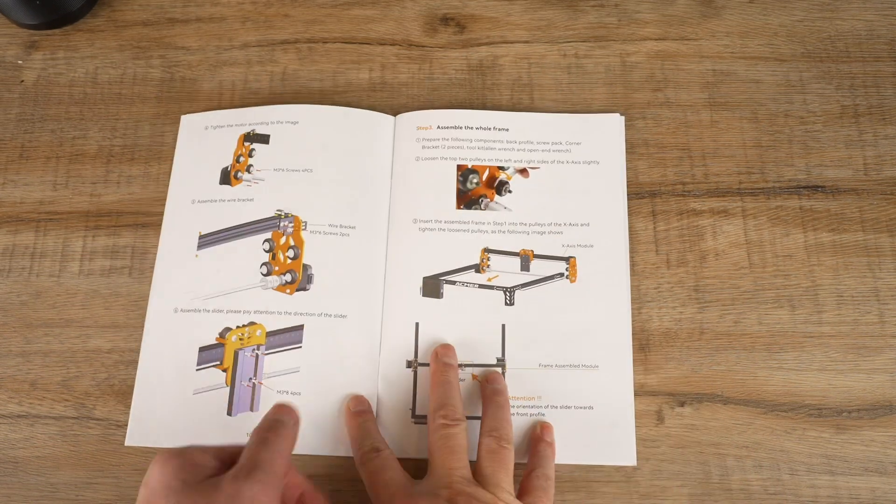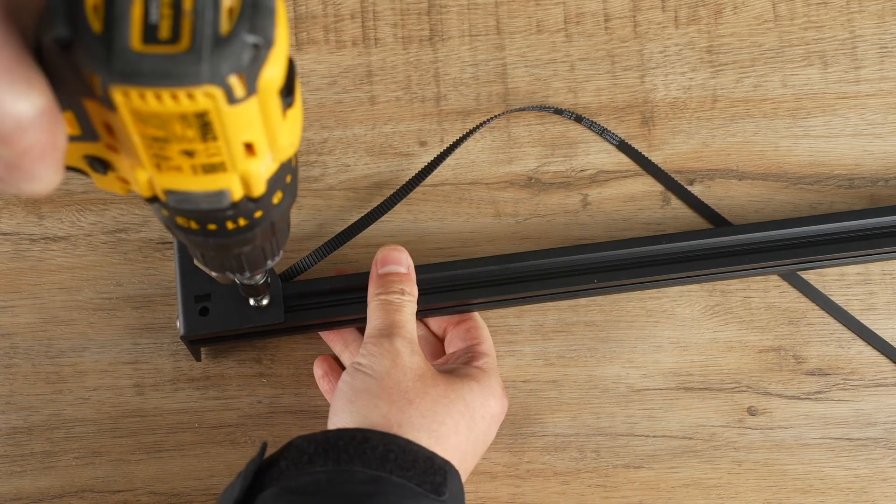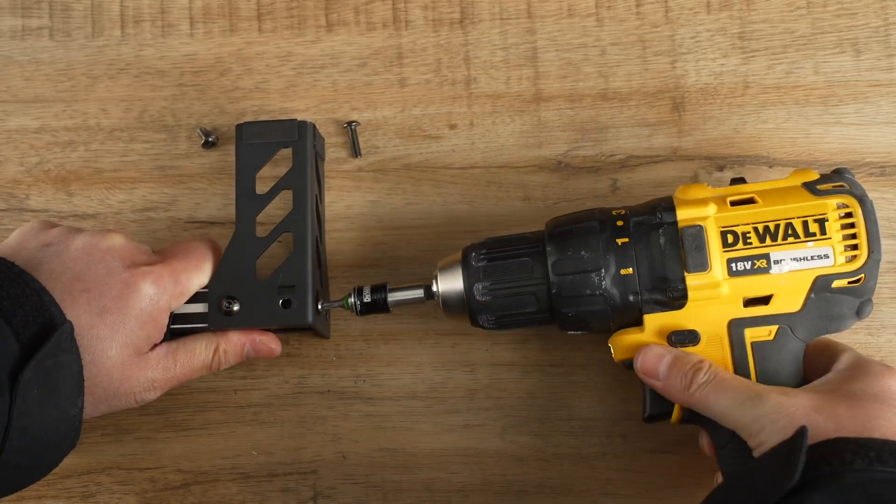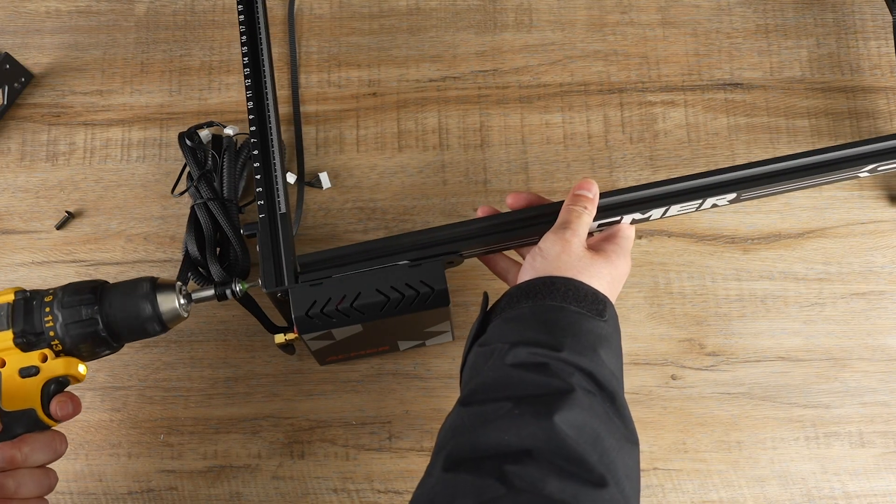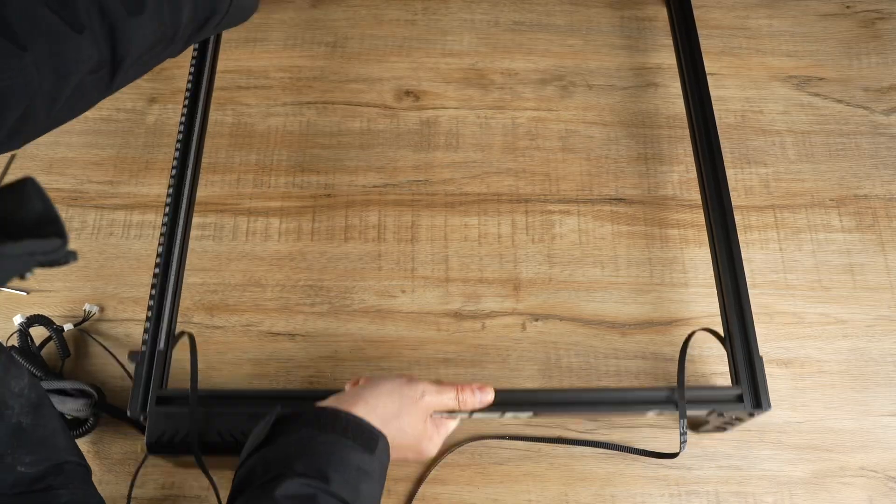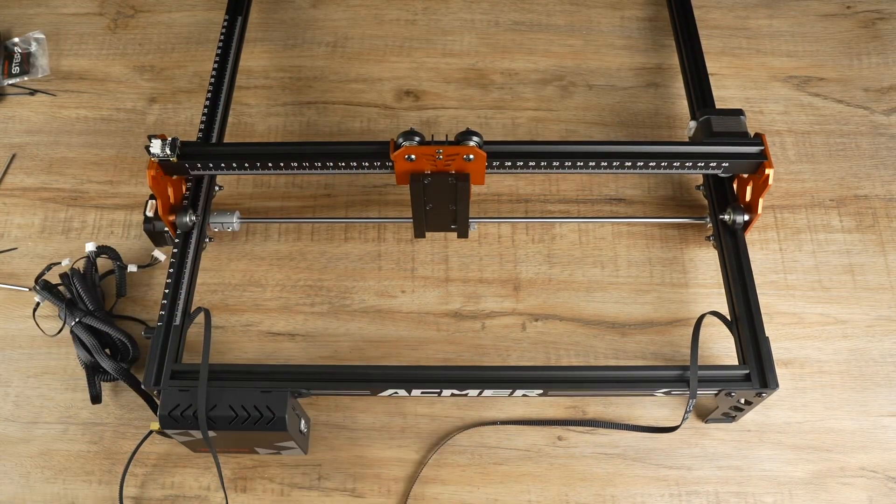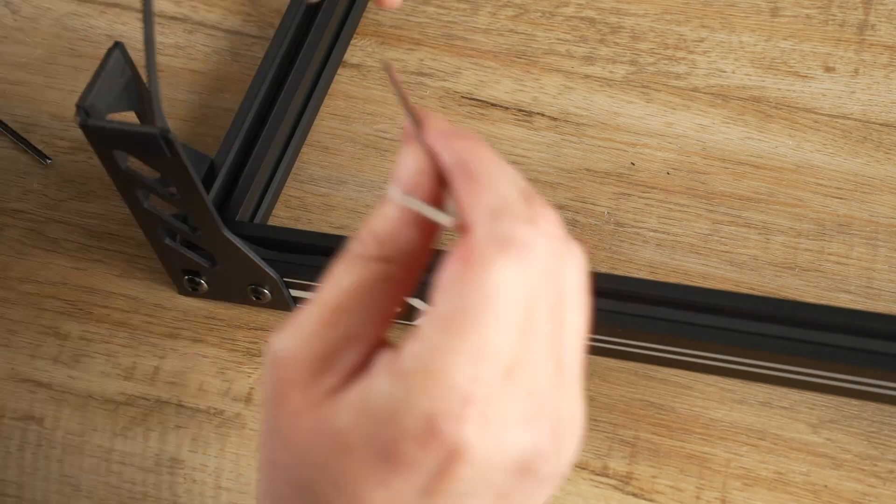Upon first inspection, the manual appeared comprehensive and well-structured, creating a positive initial impression. However, upon further examination, I realized that this initial assessment was incorrect. The manual lacked the clarity necessary for smooth assembly, leading to the potential for incorrect assembly. The belt installation, in particular, presented significant challenges.